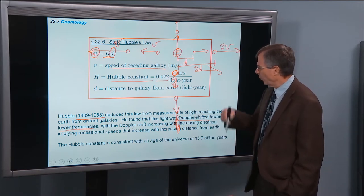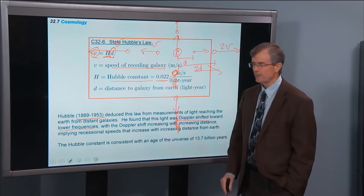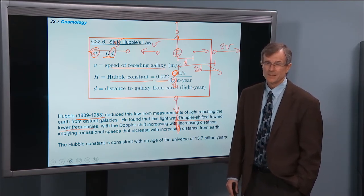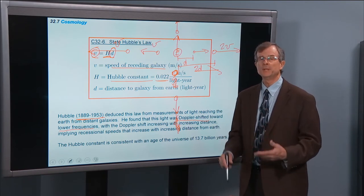So if you go out one light year further, then those speeds are going to increase by 0.022 meters per second. It's not a lot, and a light year is a long distance. But we're talking about a very, very big universe here.